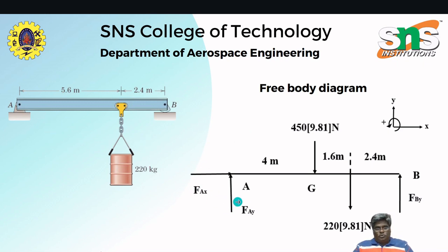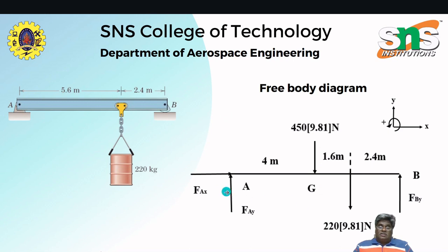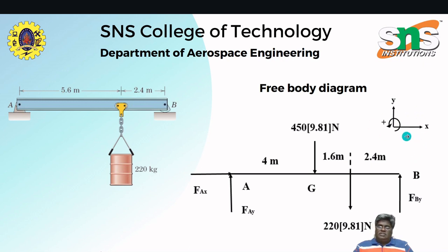From the figure, the hinged support at A has two reactions: one vertical force in the Y direction and one horizontal force. The roller support at B has only one reaction, perpendicular to the support surface, which is in the vertical direction. Sign convention used in this problem: upward direction is positive, downward direction is negative. For horizontal forces, left to right is positive and right to left is negative. For moments, clockwise is negative and anti-clockwise is positive.